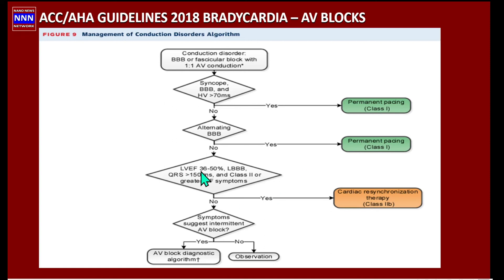If someone has a left ventricular ejection fraction between 36 and 50% in the presence of left bundle branch block or a QRS greater than 150 milliseconds and class 2 or greater heart failure — classic heart failure patients with reduced ejection fraction, bundle branch block, and wide QRS suggestive of myocardial and Purkinje system disease — cardiac resynchronization therapy is a class 2B indication, surprisingly. If symptoms suggest intermittent AV block, we refer back to the AV block diagnostic algorithm discussed previously; otherwise, we observe these patients.